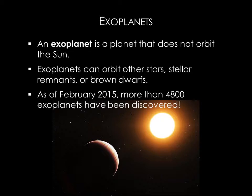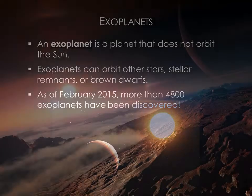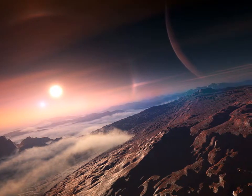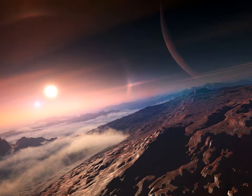An exoplanet, or extrasolar planet, is a planet that does not orbit the Sun. Exoplanets can orbit other stars, dead stars, or brown dwarfs. We have already discovered thousands of exoplanets. Current theories of star formation predict that planetary systems are a natural consequence of the process. Therefore, planets shouldn't be rare at all, but it wasn't until the 1990s that we began finding them.